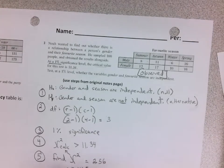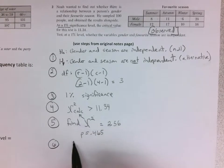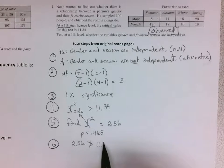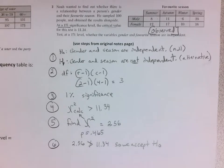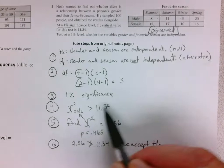So we're going to make a conclusion. And so 2.56 is not greater than 11.34. So we accept the null hypothesis. That means that gender is not related to favorite season. You could also say it's less than, but I like to say not greater than, so just saying we're disagreeing with this.